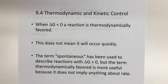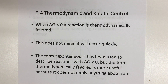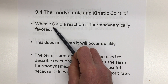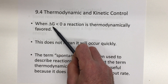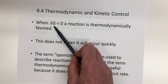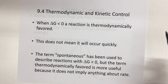Welcome back, Marauders. This is video 9.4, Thermodynamic and Kinetic Control. In our last video, we learned about delta G, which is Gibbs free energy, and we learned how to use delta G to predict if a reaction would proceed in the forward or reverse direction.